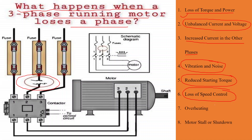Seventh, Overheating. The unbalanced current and increased current in the remaining phases can lead to overheating of the motor. Excessive heat can cause insulation degradation, reduced motor life, and potential breakdown. Eighth, Motor Stall or Shutdown. In many cases, the motor may stall or shut down due to the lack of sufficient torque and power. This can result in operational downtime and disruptions to the process or application the motor is driving.